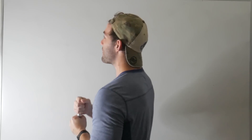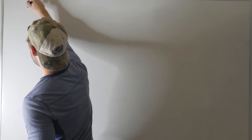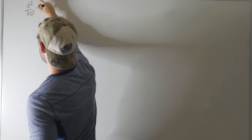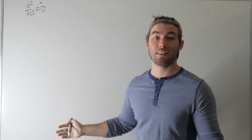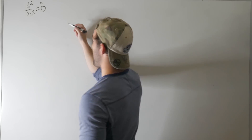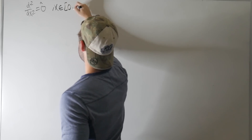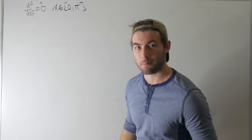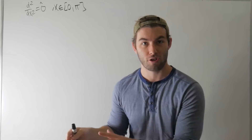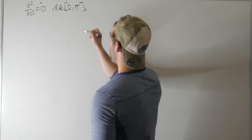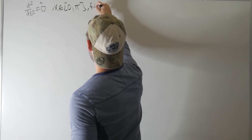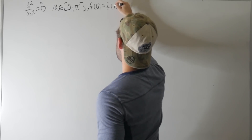Today I'm showing you an example of how to find the Green's function of an operator where the function is subject to some boundary conditions. We're going to be finding the Green's function of the operator d²/dx². The independent variable x will range from zero to pi with periodic boundary conditions, so f(0) = f(π) = 0.